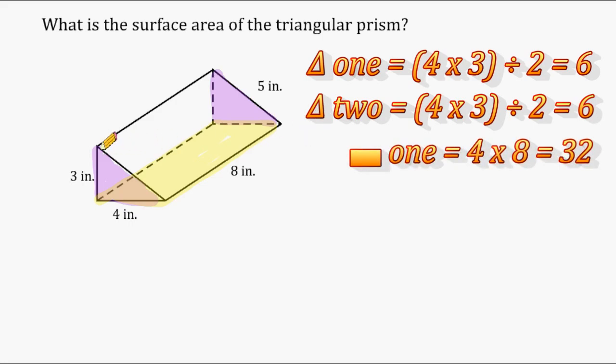Next, let's find the area of this rectangle right here. So the dimensions of this rectangle are 3 and 8, and 3 times 8 is 24.